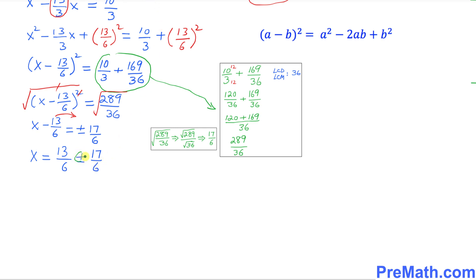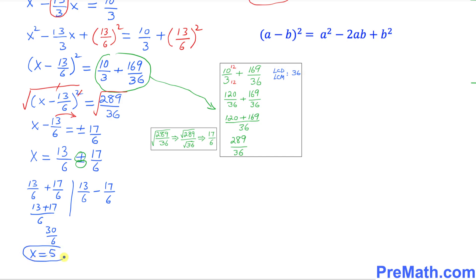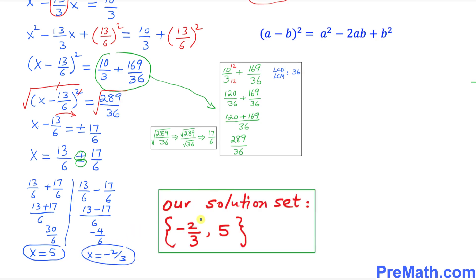We split the positive and negative signs: 13/6 plus 17/6 gives us 30/6, so x equals 5. And 13/6 minus 17/6 gives us negative 4/6, which reduces to negative 2/3. So our solution set turns out to be {−2/3, 5}.